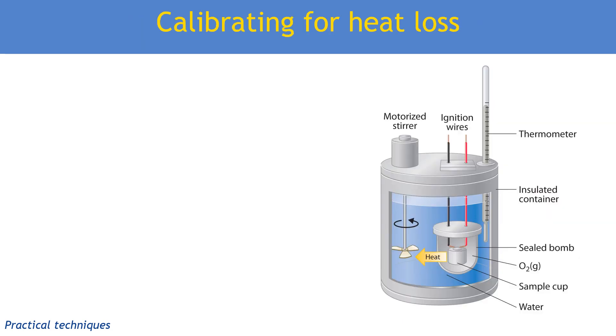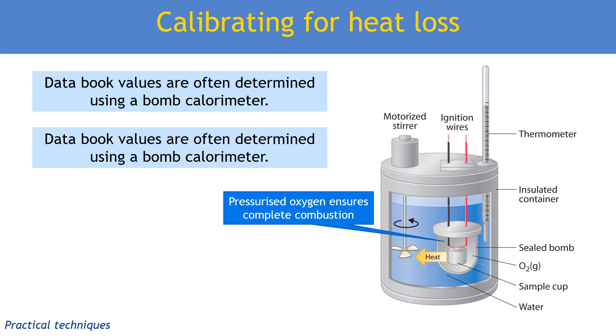Even if we try to minimize heat loss, the value we get for enthalpy of combustion will still be seriously underestimated. When enthalpy combustion values are calculated for the data book, they often use an instrument called a bomb calorimeter. In this we have a bomb, a container in which the fuel is burnt inside the container that has the water in it. This also contains pressurized oxygen to ensure complete combustion instead of just burning in air.